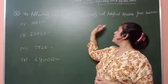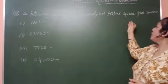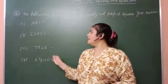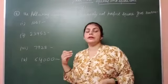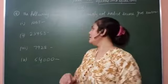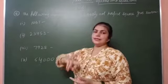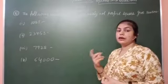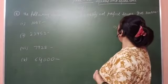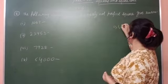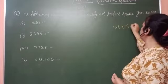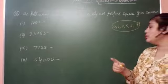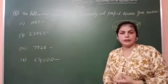These numbers are obviously not perfect square numbers. Some numbers are given to you — these are not perfect square numbers, but you have to write the reason. So what did we do in the introduction? The number ends with 0, 1, 4, 5, 6, and 9. Numbers that end with these digits are perfect square numbers.